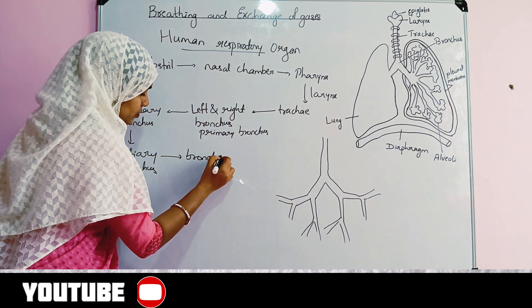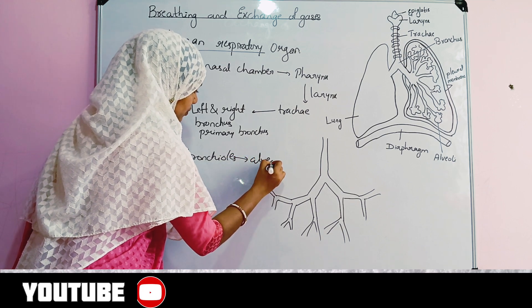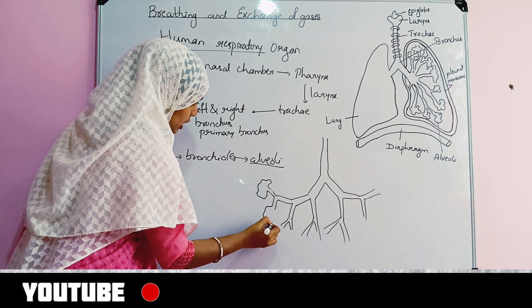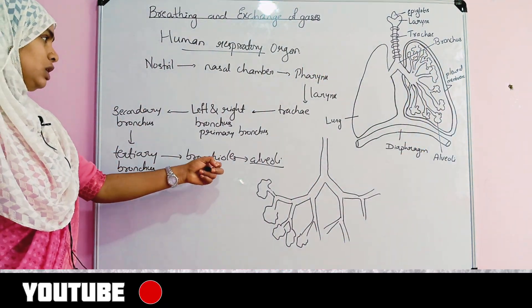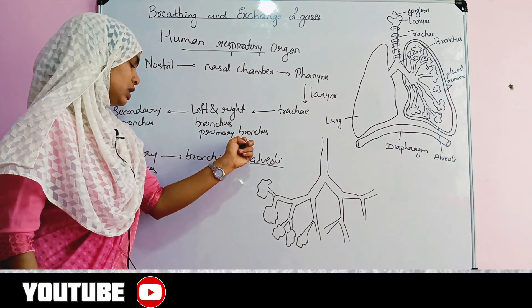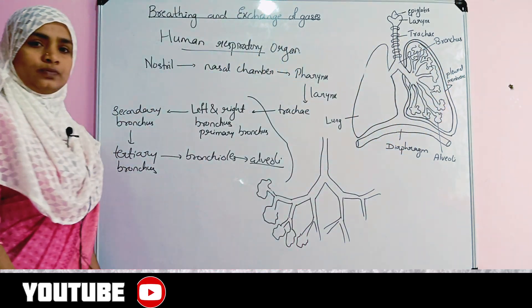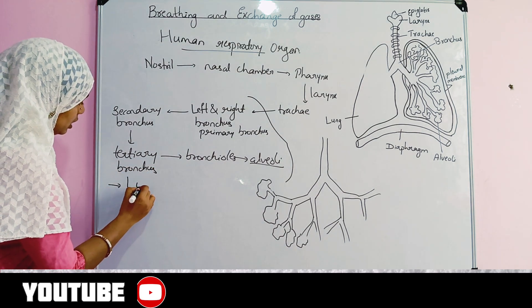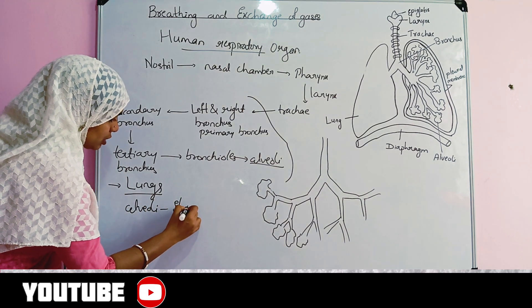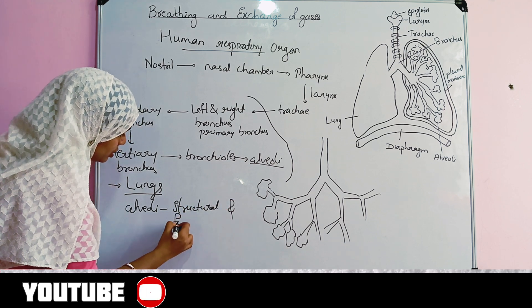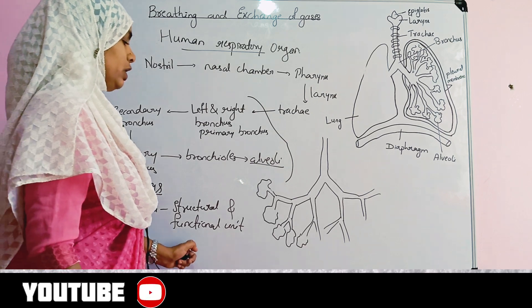The secondary bronchus is further divided into tertiary bronchus, and the tertiary bronchus is further divided into bronchioles. The bronchioles end with a final structure called alveoli. The whole structure from the left or right bronchus up to the alveoli is totally inside the lungs. The lungs are the main human respiratory organ, and the alveoli is the structural and functional unit of the lungs.